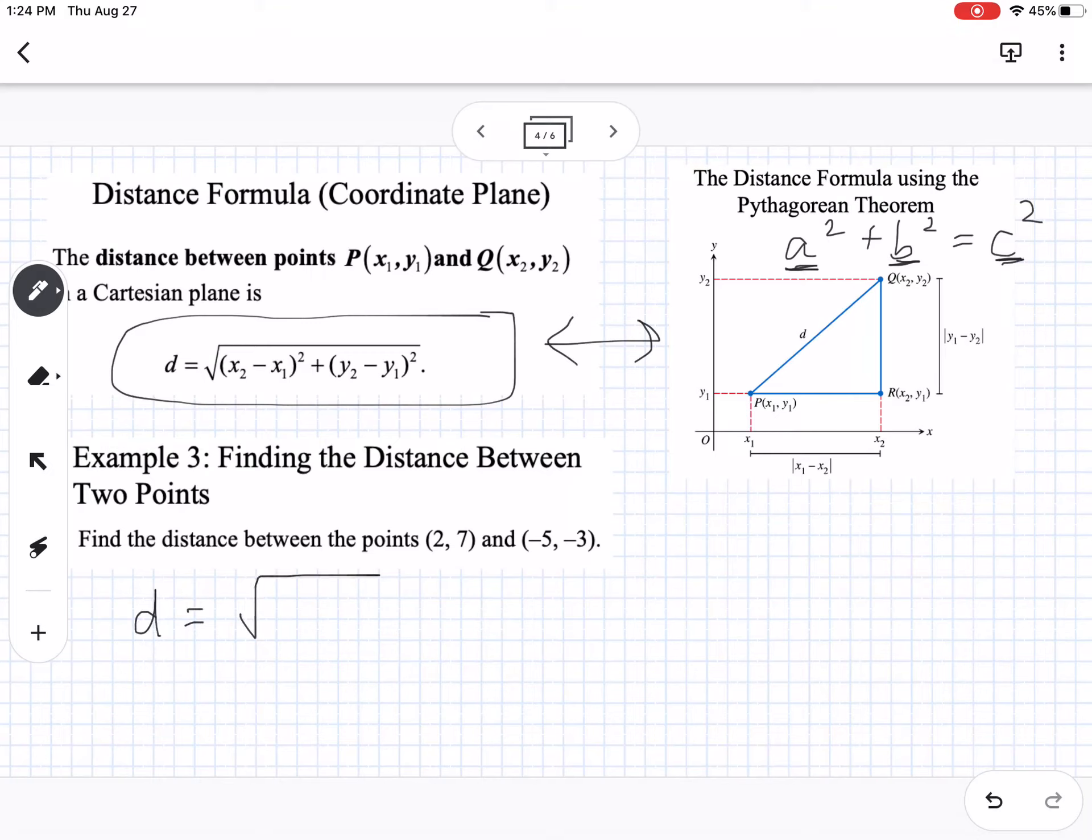So if we use our formula, so this would be my x1, y1, and my x2, y2. So that means if I follow my formula, x2 minus x1 would be negative five minus two squared, plus y2 is negative three minus seven squared. So this is going to be negative seven squared, plus negative ten squared.